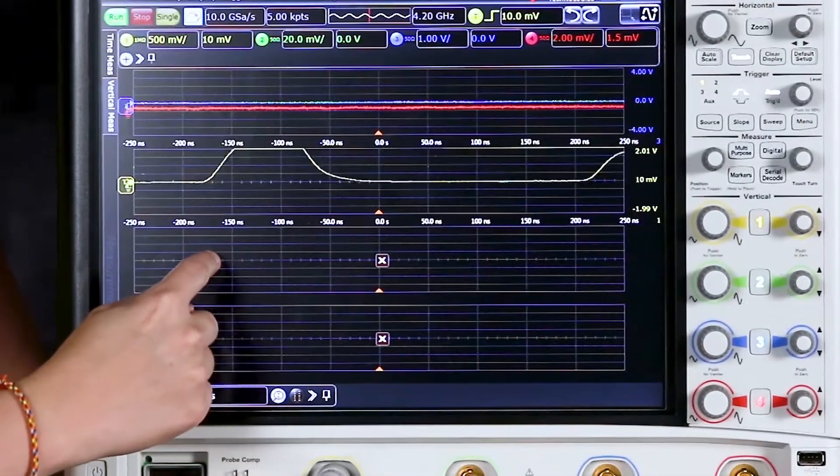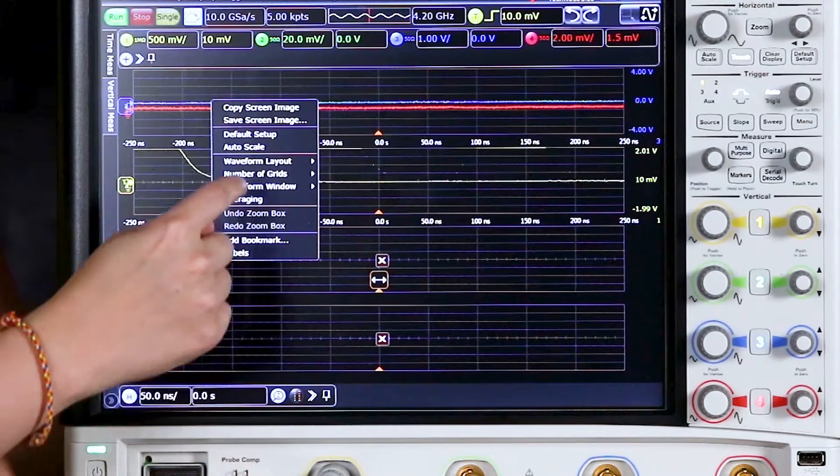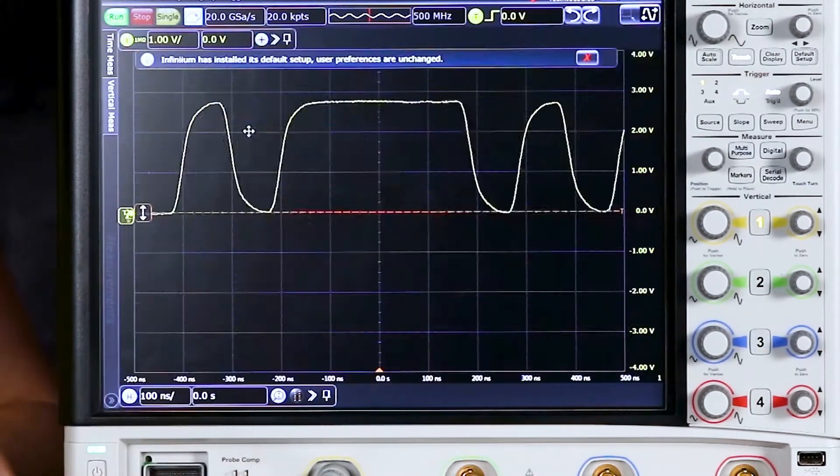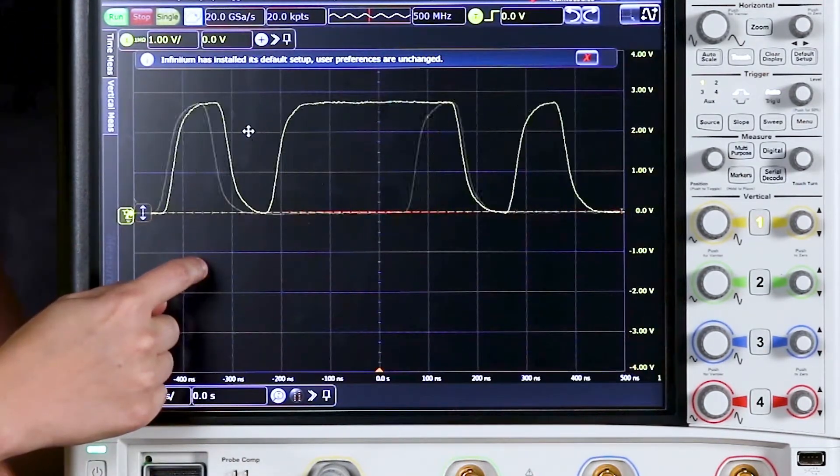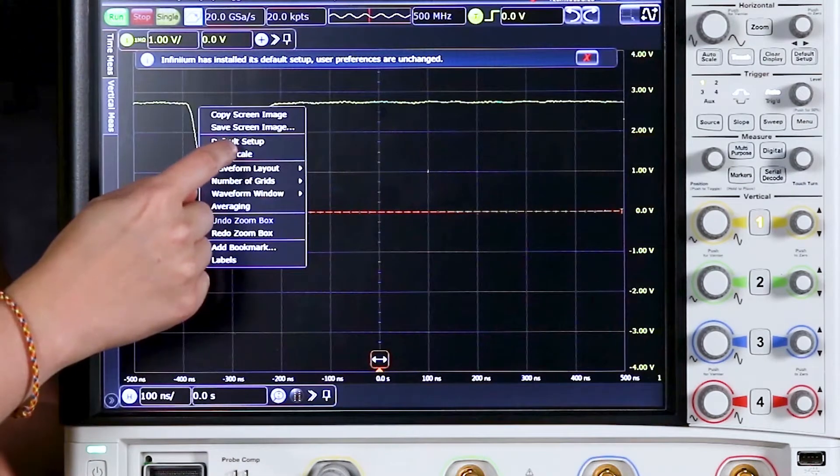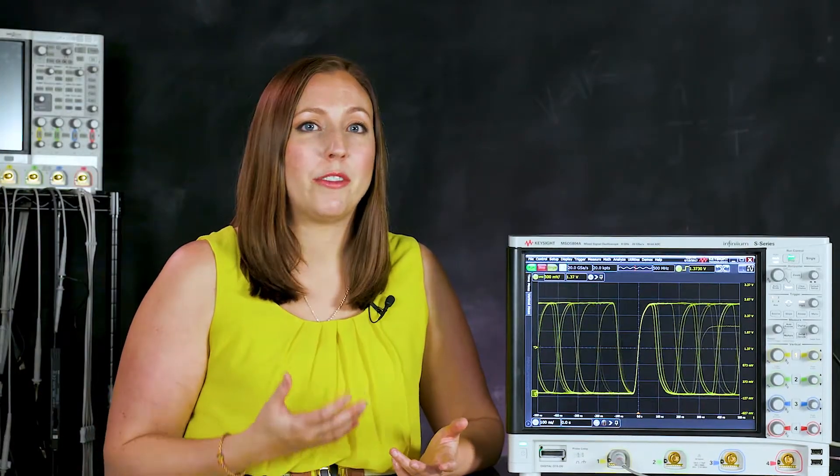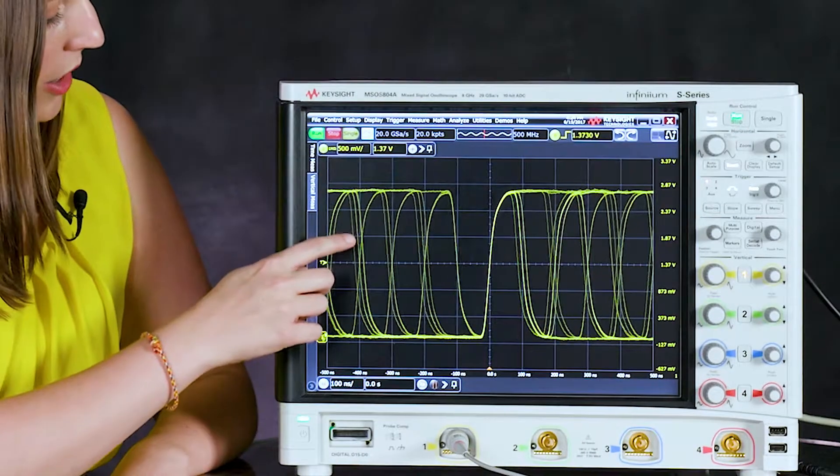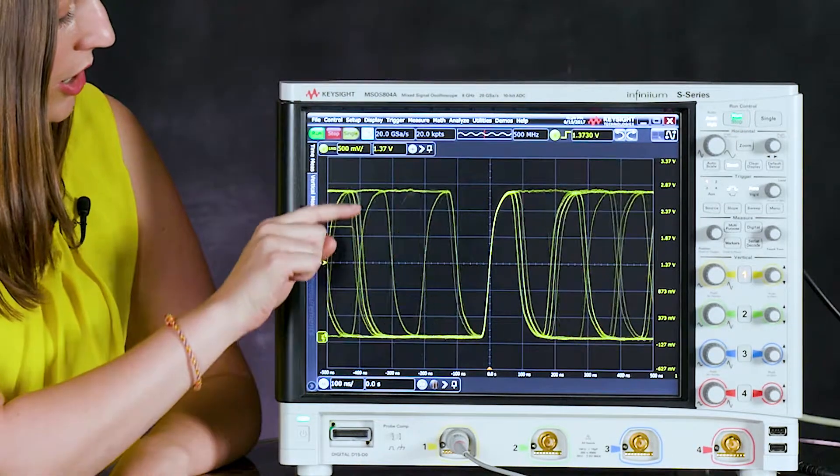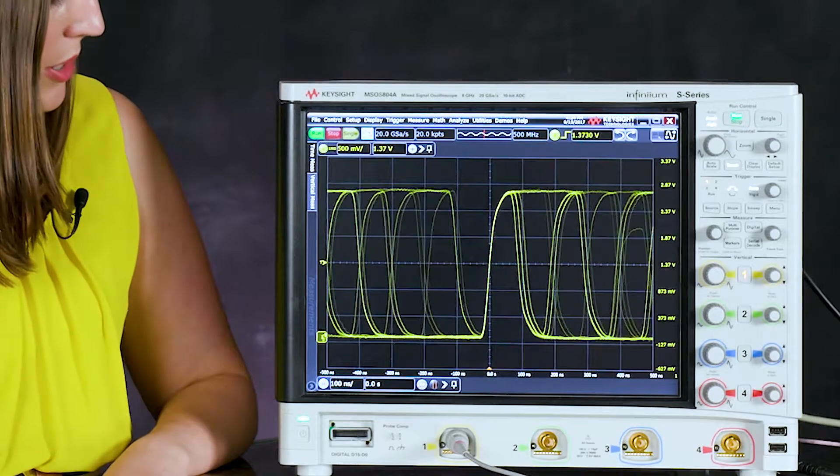So we can do that by right clicking and selecting default setup and then we can right click again and hit auto scale. Or we could have done that from the front panel. Just with these two simple steps we can already see that there's something wrong with my waveform. You can see every once in a while here there's a small pulse here that occurs that's lower than the other pulses.